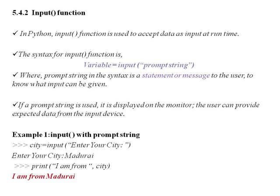For example: enter your city, the user types a city name. We use the print function with a string and a variable name — city. We declare city using input, and the output is: I am from Madurai. So we use the input function together with the print function.